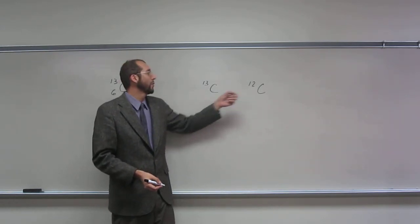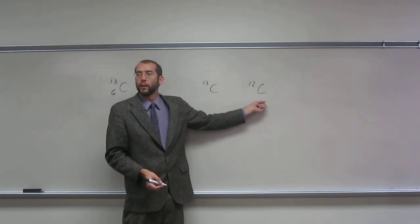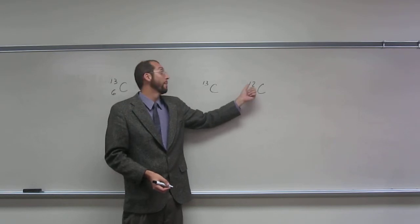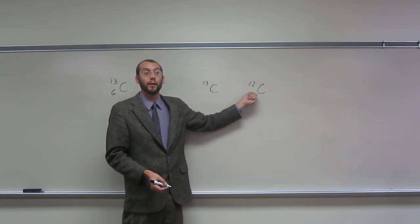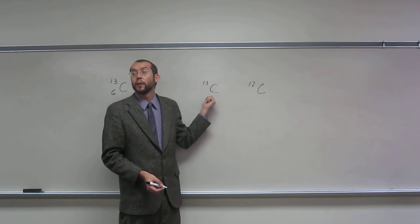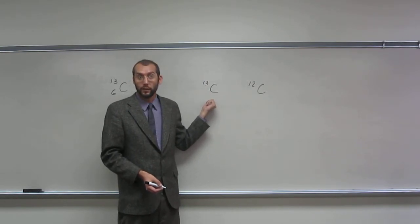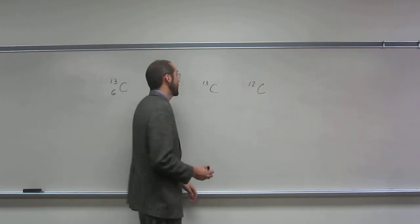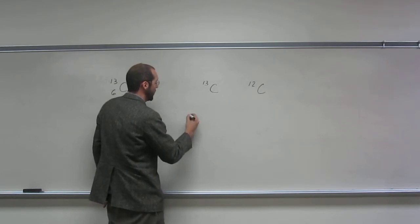But how many neutrons does this one have? What is the number on top? That's the mass number on top. So how many neutrons does this one have? Seven. Seven, right. Okay, let's just do it one more time.